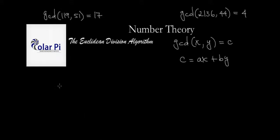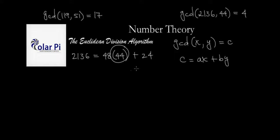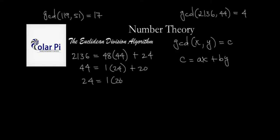In the second example, the first step as usual is to write the larger number 2136 in quotient-remainder form. The quotient is 48, so: 2136 = 48×44 + 24. Then we write 44 in quotient-remainder form involving 24: 44 = 1×24 + 20. Next, write 24 in quotient-remainder form involving 20: 24 = 1×20 + 4.